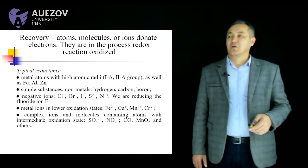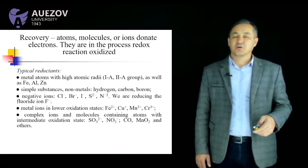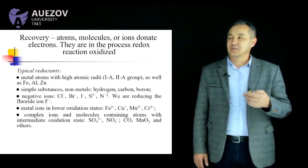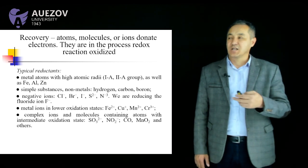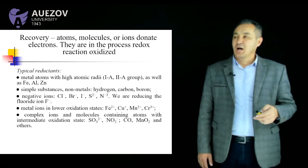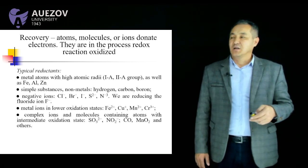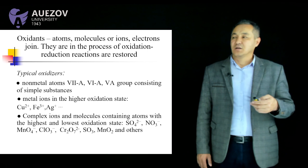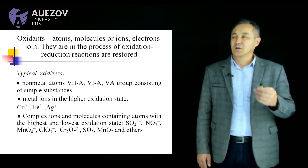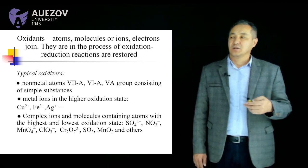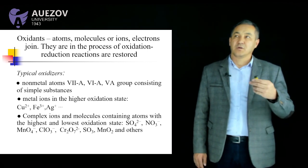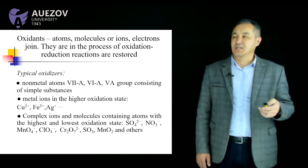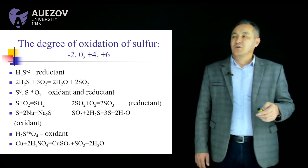Reductant atoms, molecules, or ions donate electrons; they are oxidized in the process of a redox reaction. Typical reductants are metals such as iron, aluminum, zinc, and other chemical elements. Typical oxidizers are non-metals, for example oxygen, sulfur, and other oxidizing substances.